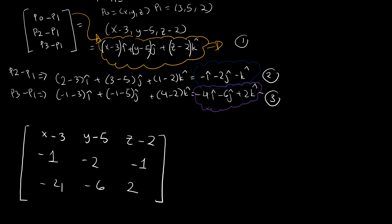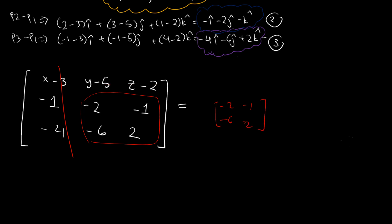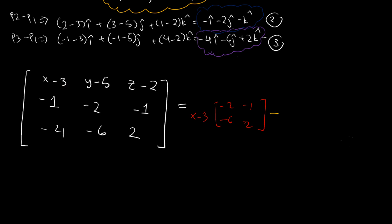Now it's just crossing out rows and columns. Crossing out the first row and first column, we're left with the 2×2 matrix: −2, −1, −6, 2. The sign pattern is positive, negative, positive, so the first term is positive and multiplied by (x−3). The second term is negative and multiplied by (y−5).